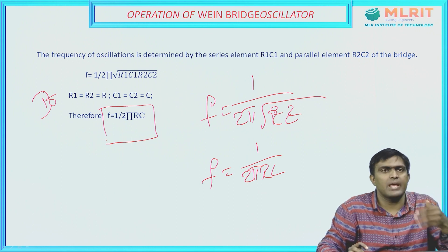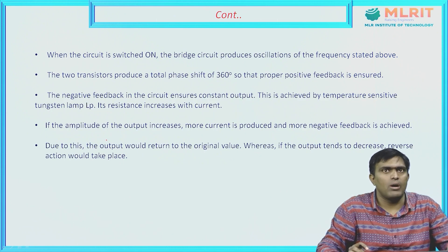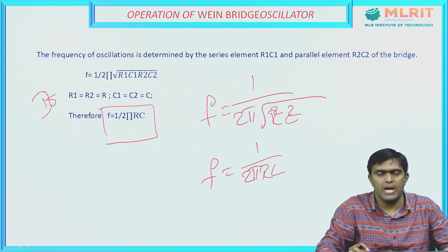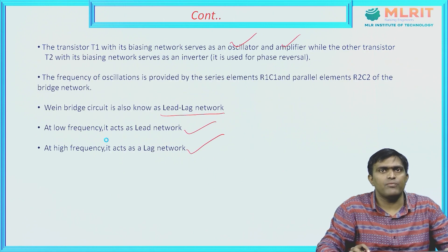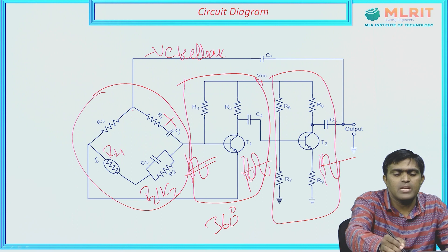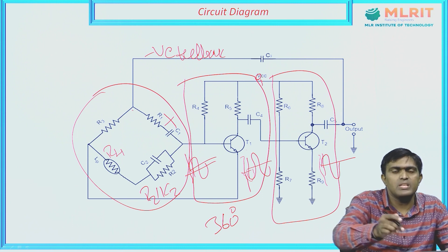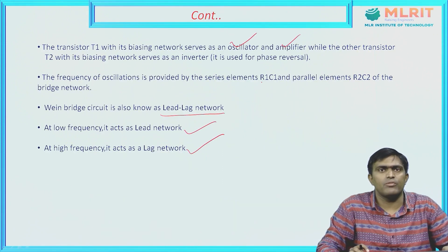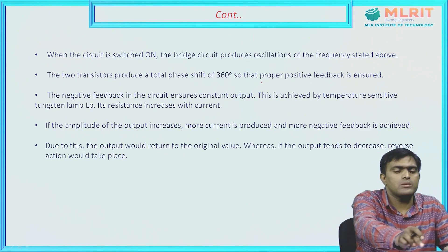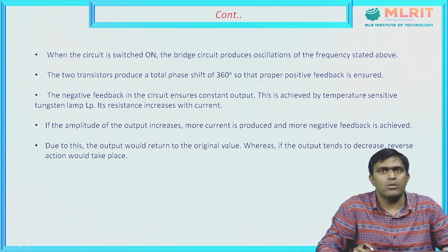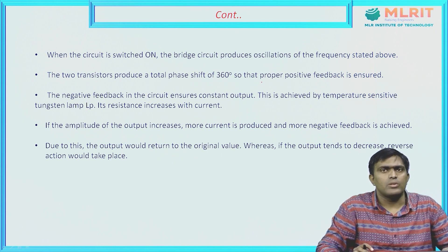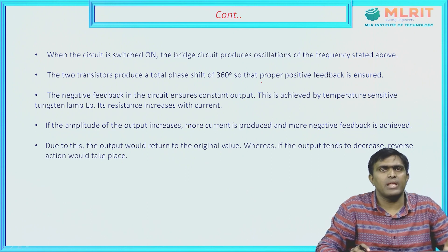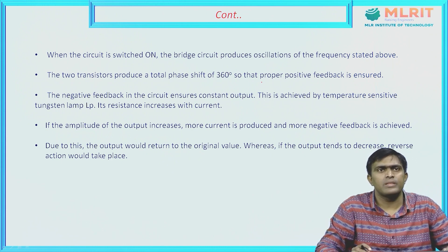The derivation will be seen in the upcoming video lectures. When the circuit is switched on by applying VCC, the bridge circuit will produce oscillations at the frequency f = 1/(2πRC). The two transistors will produce a total phase shift of 360 degrees — T1 will produce a phase shift of 180 degrees and T2 will produce another 180 degrees, so the total phase shift is 360 degrees.